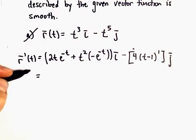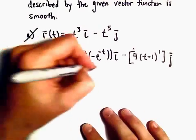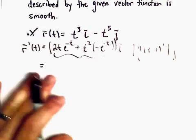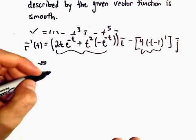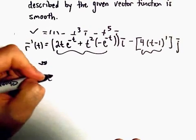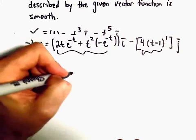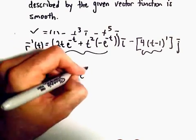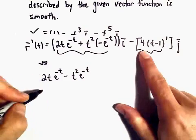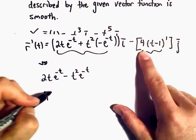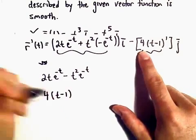Now what we do is we basically just look at each component. I'm going to simplify this a little bit. So this is 2t times e to the negative t minus t squared times e to the negative t. And then we look at the other component as well, 4 times t minus 1.